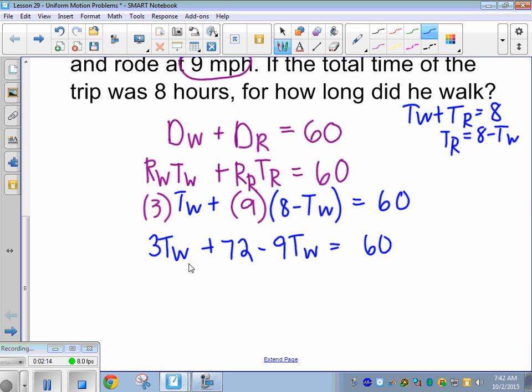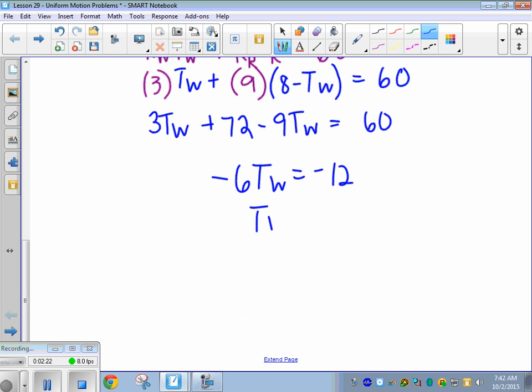So we get 3T_w plus 72 minus 9T_w equals 60. Combine like terms here. So 3T_w minus 9 is negative 6T_w. Subtract the 72, so that's negative 12 over here. And divide by negative 6, and we get 2 hours for time walking.